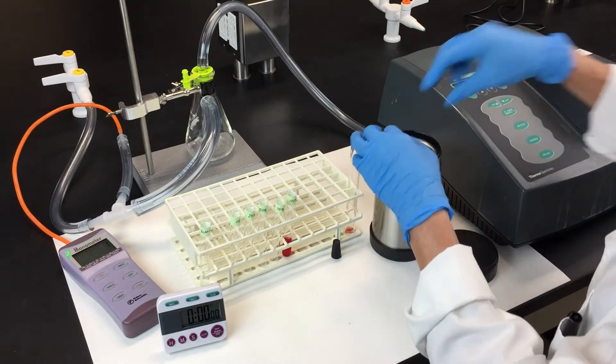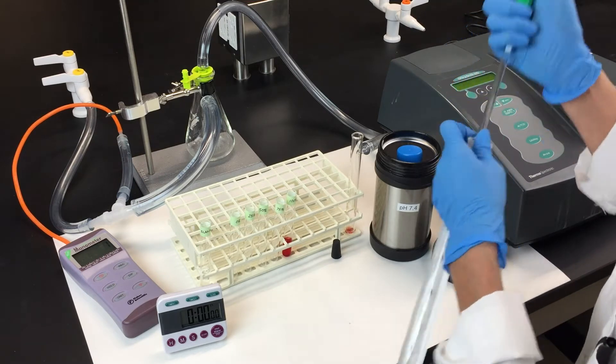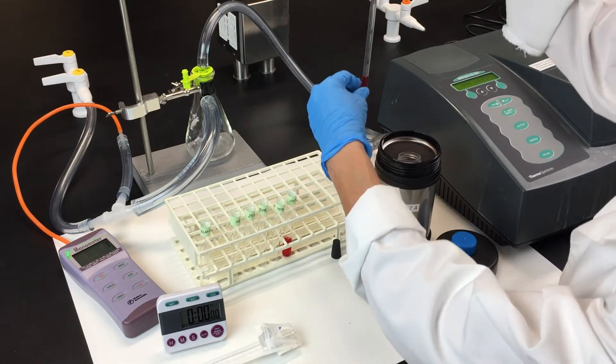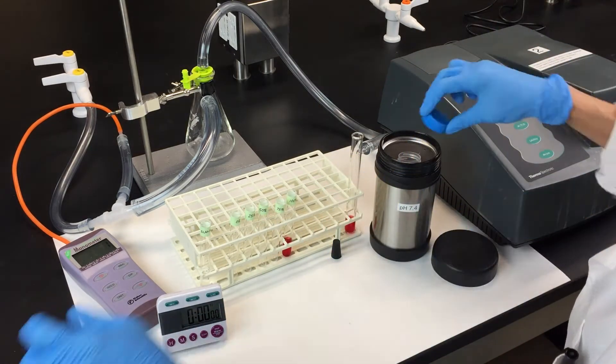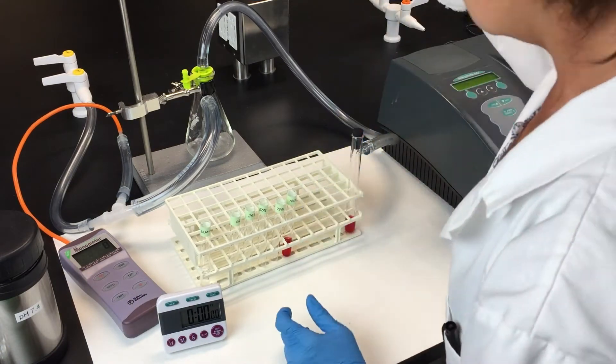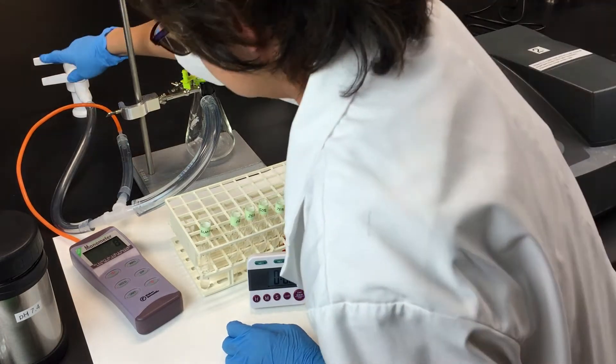Place 2.5 milliliters of the hemolysate in the side arm tube attached to the vacuum system. Seal the tube with the rubber stopper and slowly open the vacuum until it reaches its highest vacuum pressure possible.